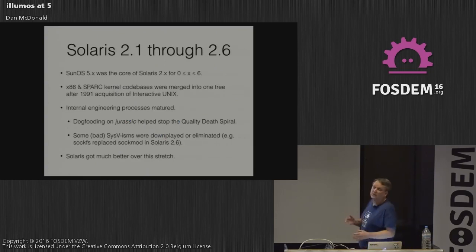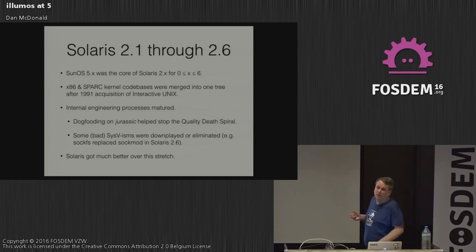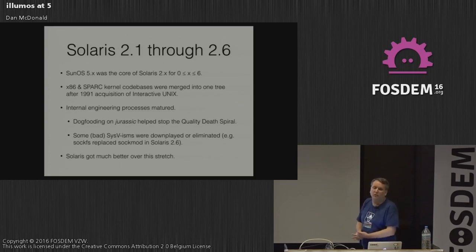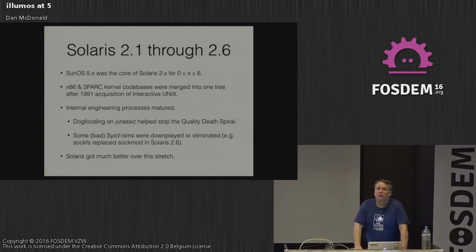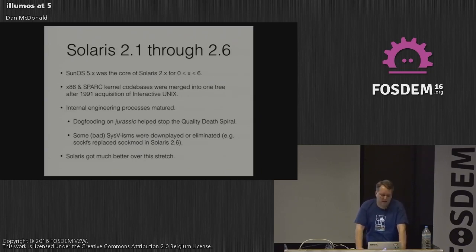Solaris 2.1 through 2.6 — SunOS 5.x corresponded to Solaris 2.x. x86 and SPARC source bases were separate in Solaris 2.0 and 2.1, and were merged after the 1991 acquisition of Interactive Unix, which is the genesis of the Solaris x86 code. Internal engineering processes matured during this time; we would eat our own dog food on a well-known server originally in Mountain View, later in Menlo Park, called Jurassic, and it helped stop the quality death spiral.